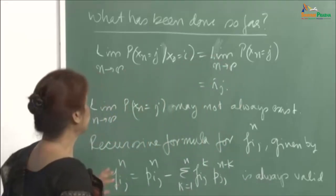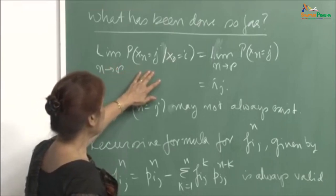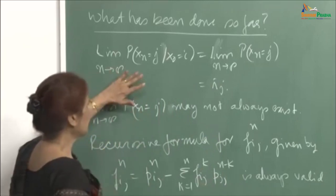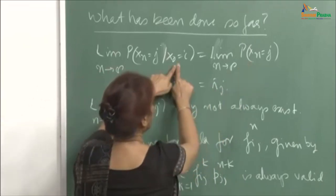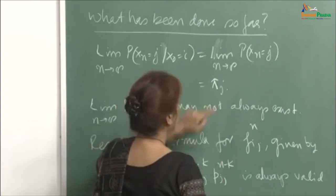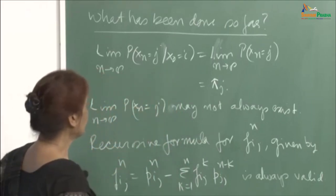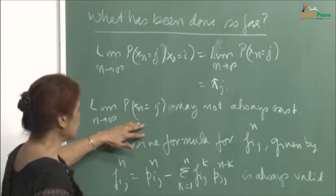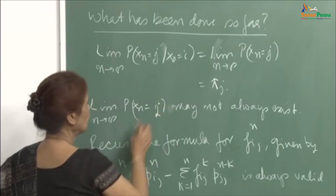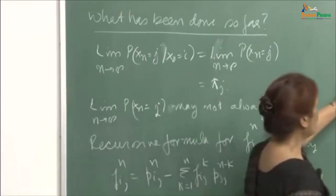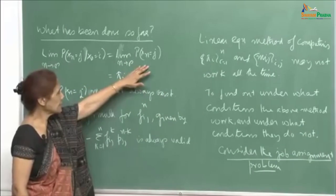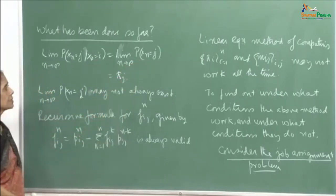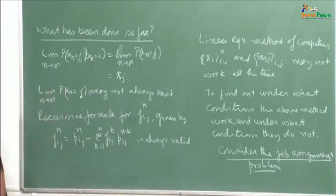Let us recall what has been done so far. We said that the limit of P(X_n = j | X_0 = i) exists and is pi_j, independent of the initial state. This was the tacit assumption, and therefore we could solve these pi_j's through a system of linear equations. But this was under the assumption that this limit exists. It is not really always true that this will exist.